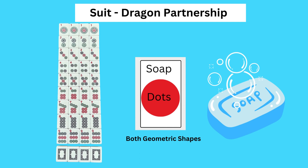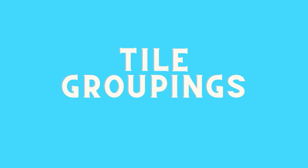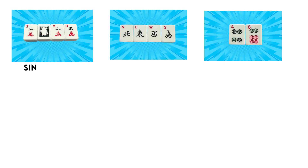Next up are tile groupings. The first grouping we're going to talk about are single tiles — tiles that sit next to each other but do not match, as you can see in each one of these pictures. The first grouping shown is a 2-0-2-3, with the Dr. Jekyll and Mr. Hyde tile sitting right between the 2 and the 2023 year tiles.